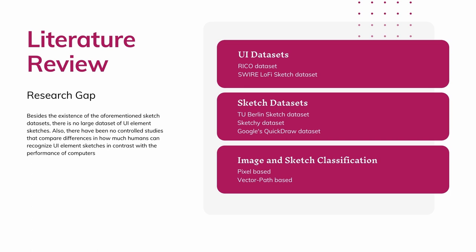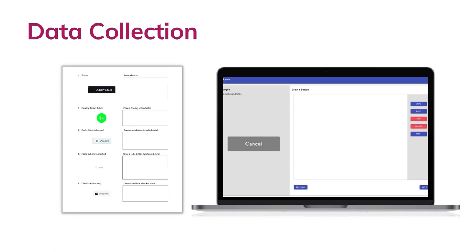We approached the research following the footsteps of prior research in collecting drawings of real-life objects. First, we identified a list of UI element categories to include in the dataset. Then we created questionnaires and collected the respective sketches from participants. In both the paper and digital questionnaires, we show a sample UI element image on the left-hand side, randomized to get varied sketches even if participants use a trace grid, and on the right-hand side we provide a sketching area.